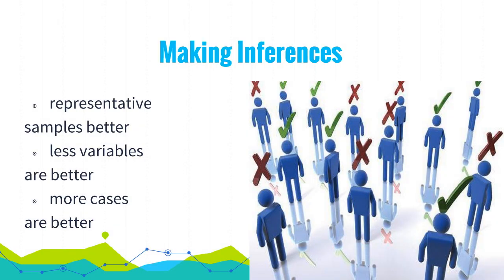Making inferences: there are three key points. First, representative samples are better — your sample should represent everyone in the population, including different genders, ethnicities, and backgrounds. Second, fewer variables are better — you're controlling for one variable to identify cause and effect; too many other factors make for a poor study. Third, more cases are better — the more examples you have to prove your point, the stronger your argument will be.